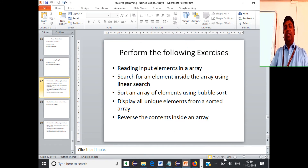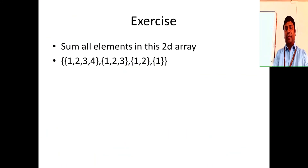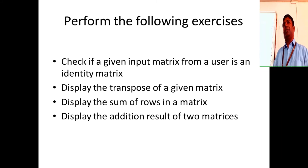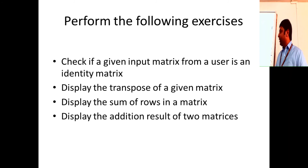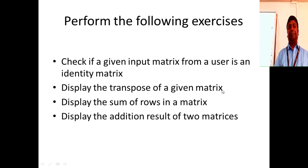We are now done with 2D arrays. Let's take up some more exercises: read an input matrix, check if it is an identity matrix, display the transpose of a given matrix, find the sum of rows, and find the result of multiplying two matrices. An identity matrix has 1s on the principal diagonal and 0s everywhere else.